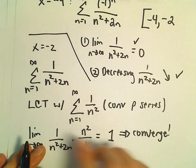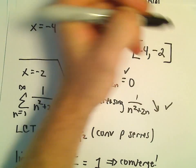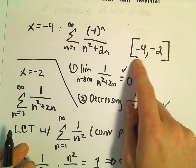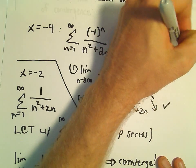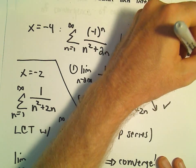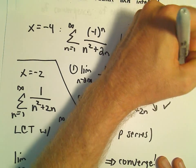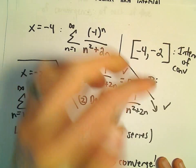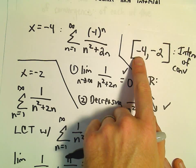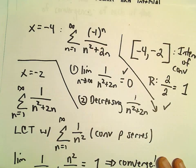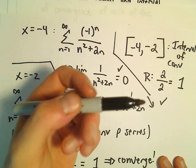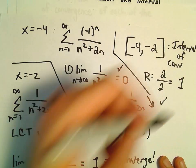So, the series also converges at negative 2. So, there's our interval of convergence from negative 4 to negative 2. So, that's our interval of convergence. And then the radius of convergence. Again, the length of this interval from negative 4 to negative 2 is just going to be 2. We divide that by 2. And we'll get again the value of just positive 1 for the radius of convergence.